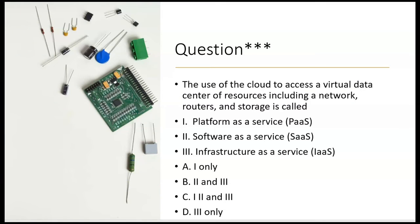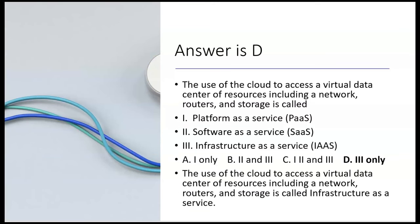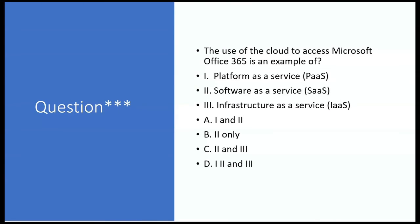How about this: the use of the cloud to access a virtual data center of resources including a network, routers, and storage is called what? Option one — Platform as a Service? No, PaaS is about using the cloud to create software. Option two — Software as a Service? No. Option three — Infrastructure as a Service? Yes — that's choice D. The use of the cloud to access a virtual data center of resources including a network, routers, and storage — that's IaaS.